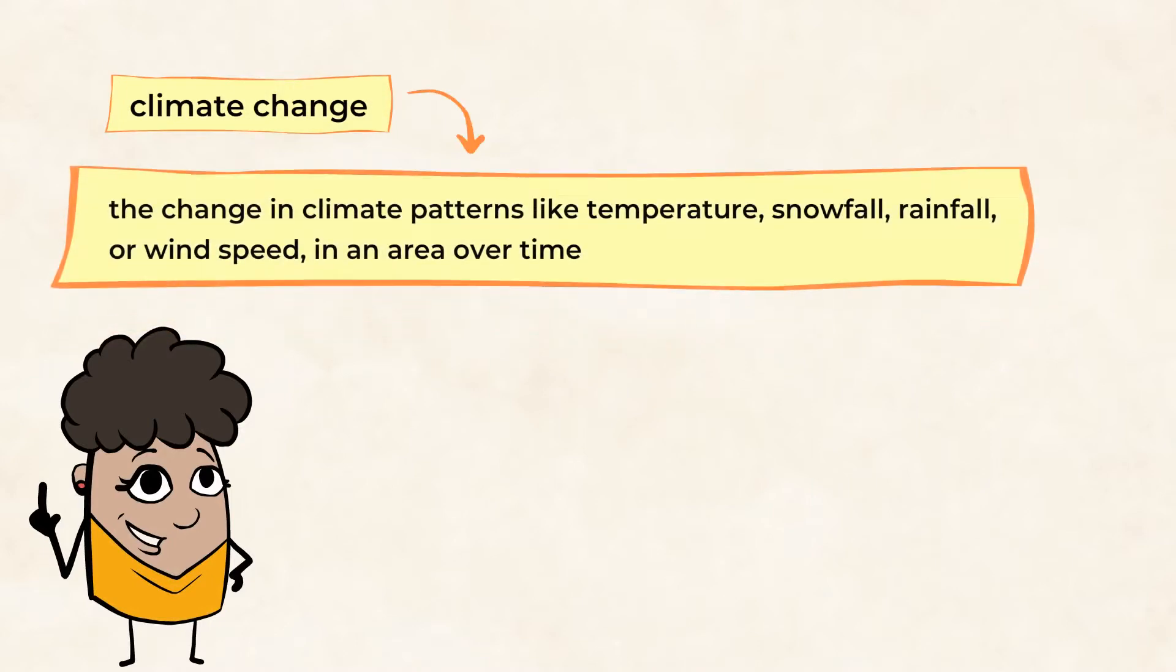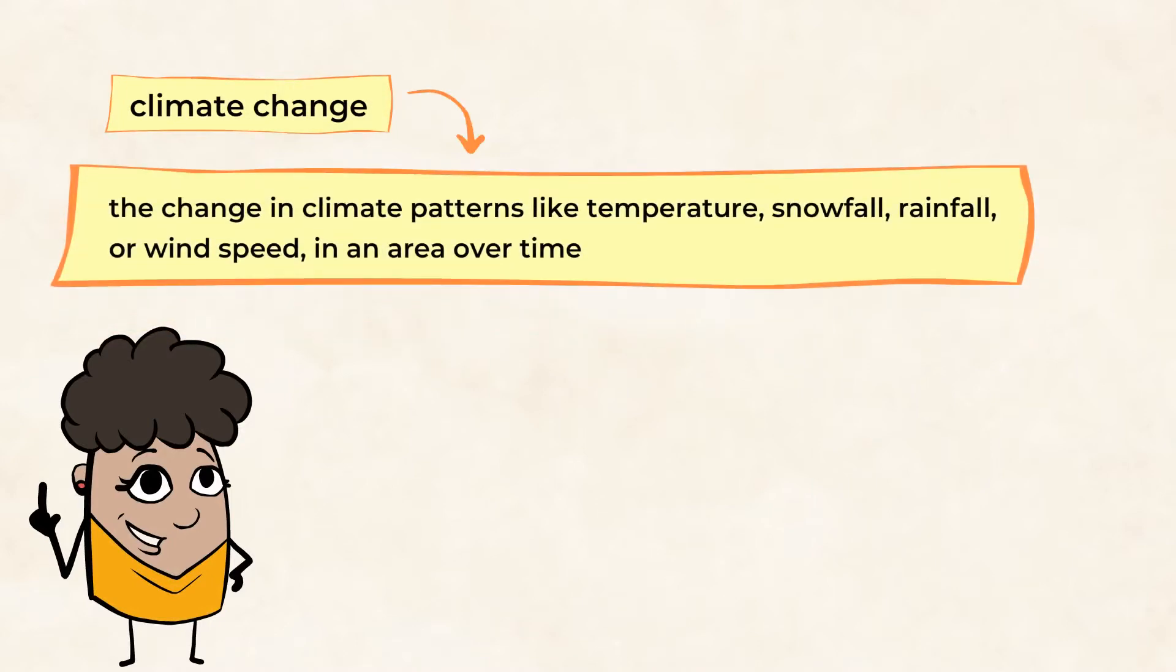Climate change refers to the change in climate patterns like temperature, snowfall, rainfall, or wind speed in an area over time.